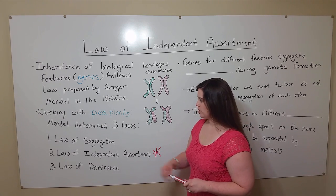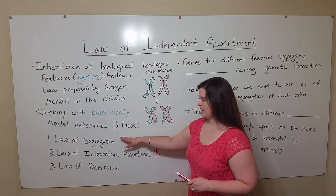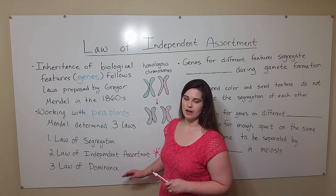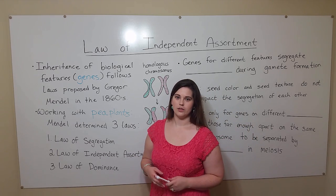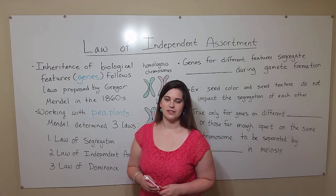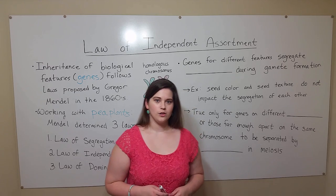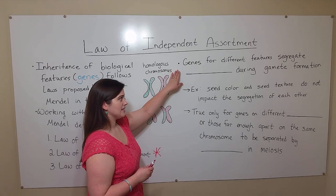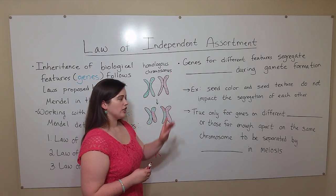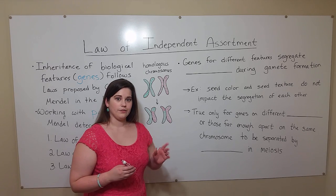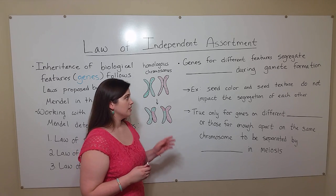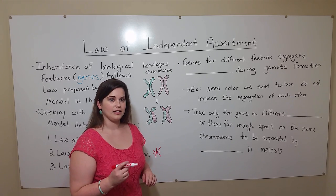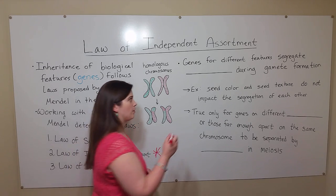If you are interested in learning more about the law of segregation or the law of dominance, see my other videos on those topics. But now for the law of independent assortment: it states that genes for different features segregate independently during gamete formation.